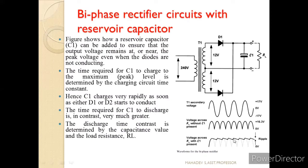We call this variation in output the ripple. This is how we generate a constant DC voltage with the help of a biphase rectifier along with the capacitor. Without the capacitor we see only the two half-cycle waveforms; with the capacitor we see the smoothed output that looks like a DC voltage.